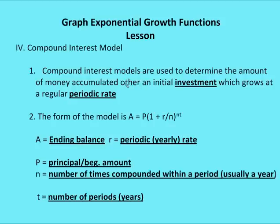The form of the model is A equals the principal times one plus the regular yearly rate r over the number of times compounded n, all raised to n times t — where n is the number of times compounded per year and t is the number of years. So instead of a simple yearly rate, we're accruing an increase at a rate greater than yearly, which could be monthly, quarterly, or daily.